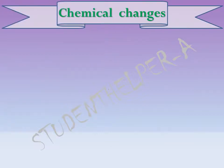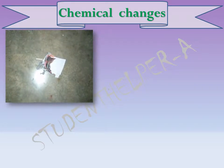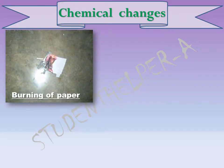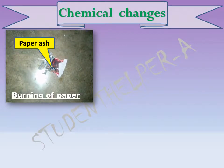Chemical changes. A change in which the nature and identity of the participating substances changes is called a chemical change. After such a change, the substance does not return to its old state. For example, burning of paper — after burning, the nature of the paper changes. Burnt paper is called ashes, and the nature of those ashes differs completely from the paper. Paper cannot be made from ashes.